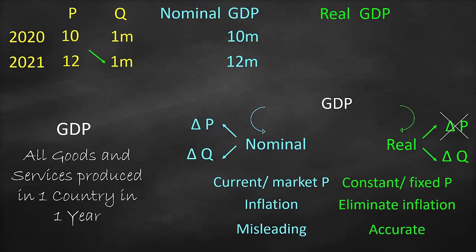In order to calculate real GDP, we need to choose a base year and fix the price at that year. Let's take 2020 as our base year. For year 2020, real GDP = price × quantity = $10 × 1 million = $10 million. For year 2021, we use the base year price ($10) multiplied by the new quantity of 2021 (1 million), giving us $10 million as well. Looking at real GDP, 2020 and 2021 are exactly the same.